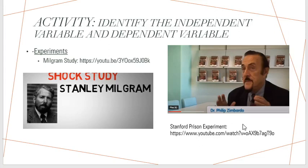The Stanford Prison Experiment was unethical because it was emotionally and psychologically harming the prisoners. Zimbardo stopped the experiment only because another faculty member pointed out that what he was doing to students was unethical and wrong — that was the only reason he stopped. This raises the question: what is being done to maintain ethical standards for participants willing to participate in research experiments?